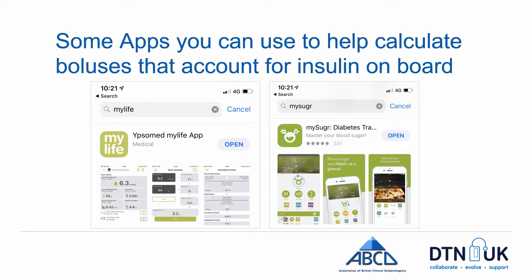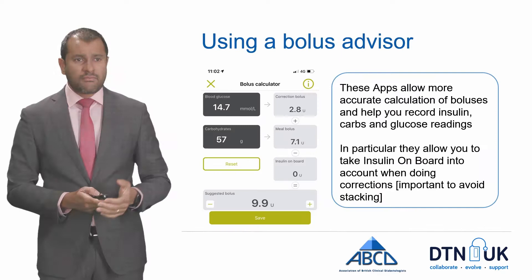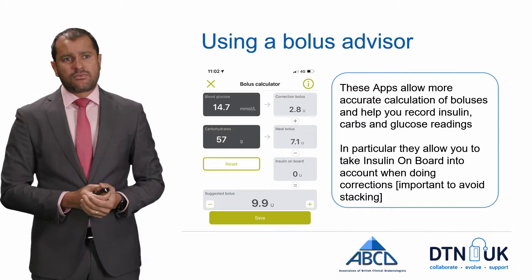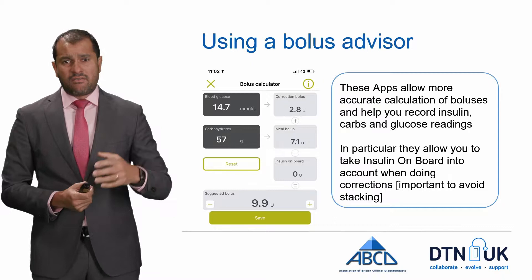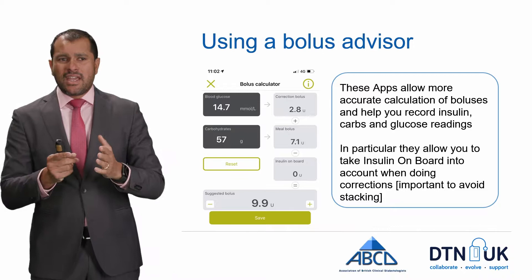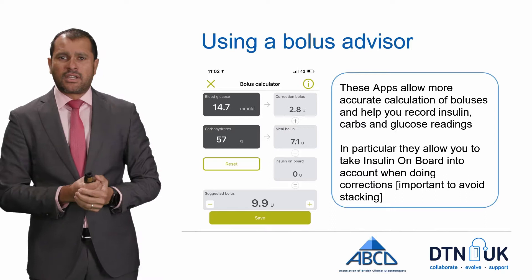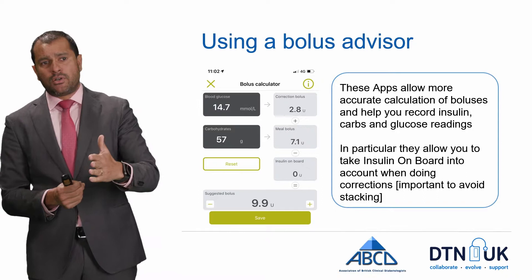Two apps we routinely use that allow you to input your settings, use Libre data, and track insulin on board are the MyLife app and the MySugar app — discuss these with your healthcare team. For example, in the MyLife app: blood glucose is 14.7, correction dose is 2.8, with 56 grams of carbohydrate the meal bolus is 7.1. If you have insulin on board — say 1 unit — the suggested bolus reduces from 9.9 to 8.8, helping you avoid stacking.